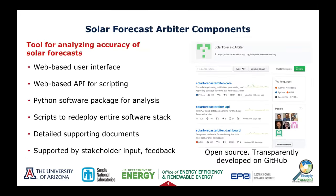There are a lot of technical components to the Solar Forecast Arbiter. These include the web-based user interface, which is how most people are going to interact with the Solar Forecast Arbiter, especially getting started. There's the API for scripting, and everything is implemented in a Python software package for analysis. There are scripts to redeploy this entire software stack on your own server if you'd like to, along with all the detailed supporting documents. All of this is supported by stakeholder input and feedback. It's developed on GitHub, and many of our project discussions take place out in the open on GitHub issues and pull requests. We encourage you to browse those to better understand the history of the project.